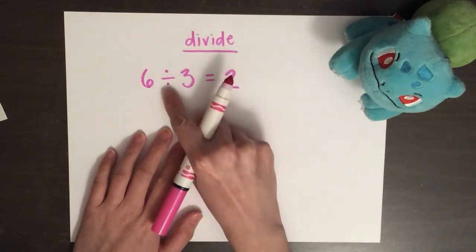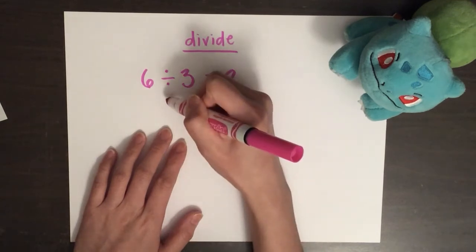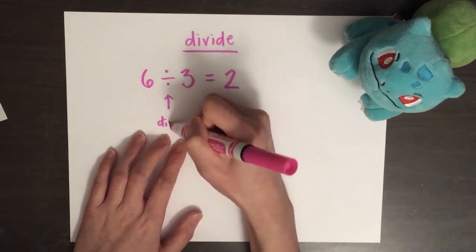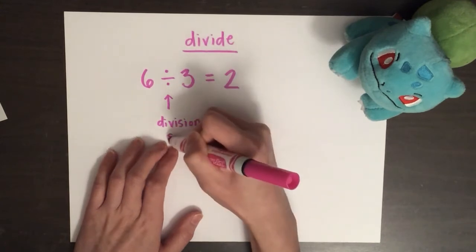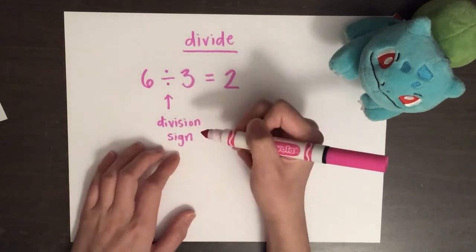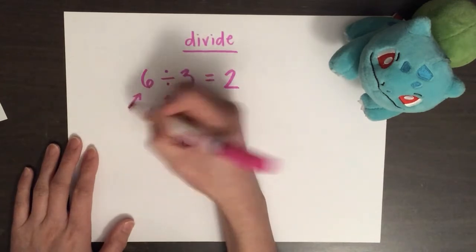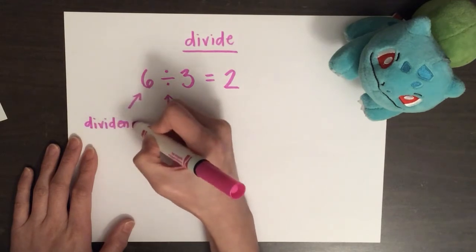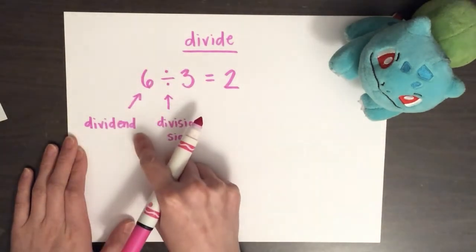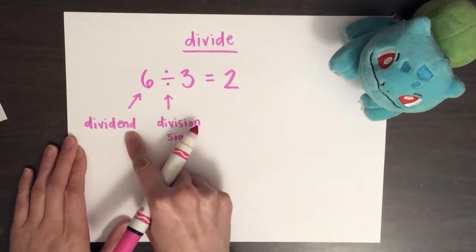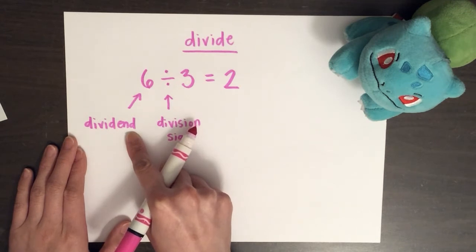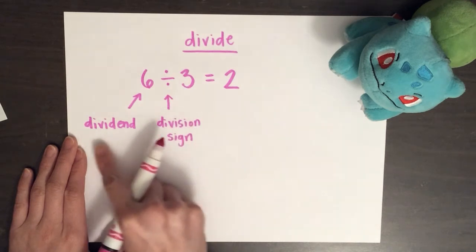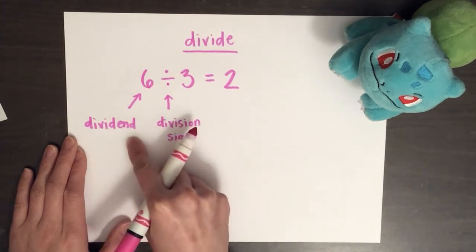6 divided by 3 equals 2. First, let's look at this symbol. This is the division symbol. This first number over here is called the dividend. Repeat after me. Dividend. The dividend is the number of items or things that's being split up into groups. Basically, the dividend is what you are sharing.